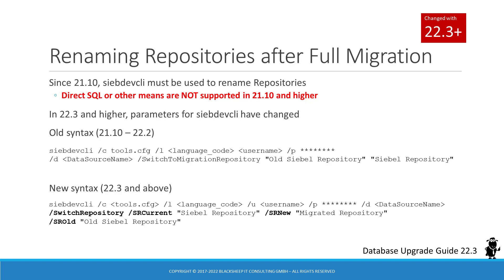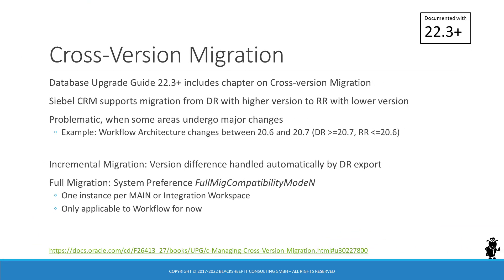The Database Upgrade Guide 22.3 informs us of a slightly different syntax for the command line. In the new release and in the future, the SwitchRepository command replaces the SwitchToMigrationRepository command. Administrators now have to provide three input arguments, referring to the names of the current and new repository, as well as the name to use for renaming the current repository. Another documentation enhancement, also in the Database Upgrade Guide, provides details on the migration application's cross-version migration capabilities.